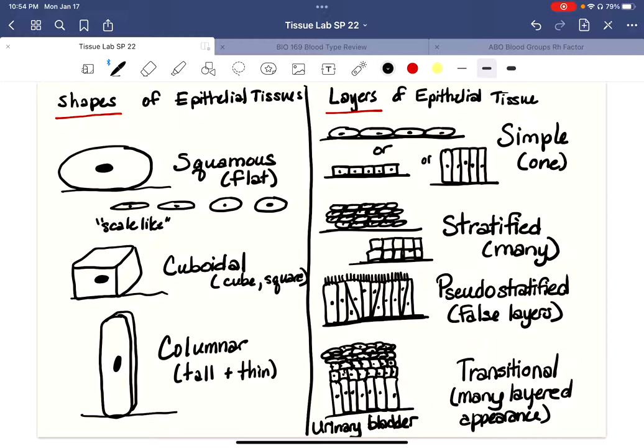And that's so the bladder can stretch out when it's full, and so this will take on a very different appearance when the bladder is full. But for right now, it looks as though many different types or shapes of epithelial tissue cells are stacked on top of one another, and that's transitional.